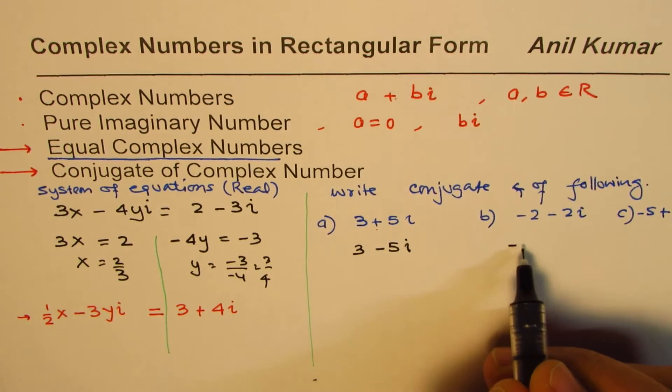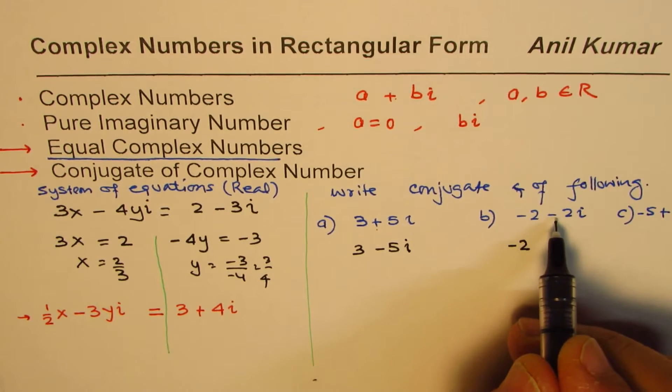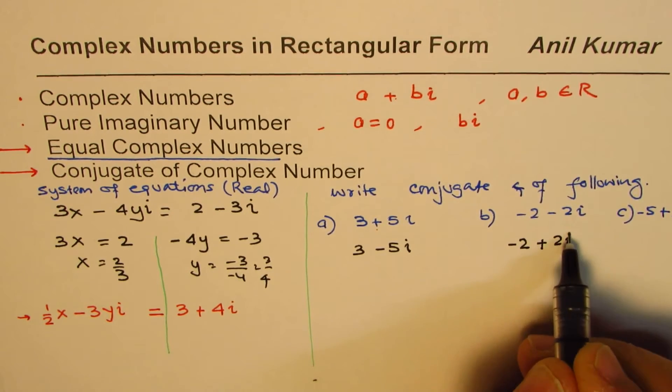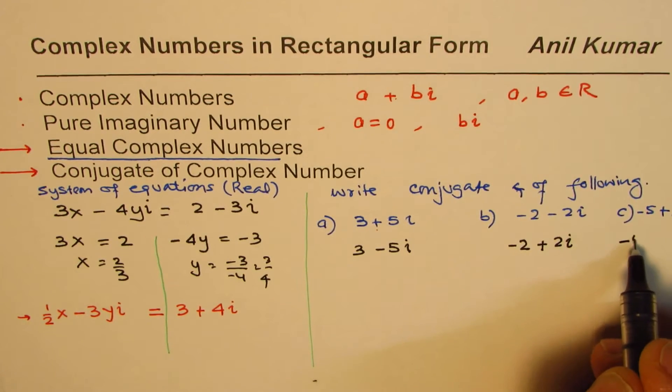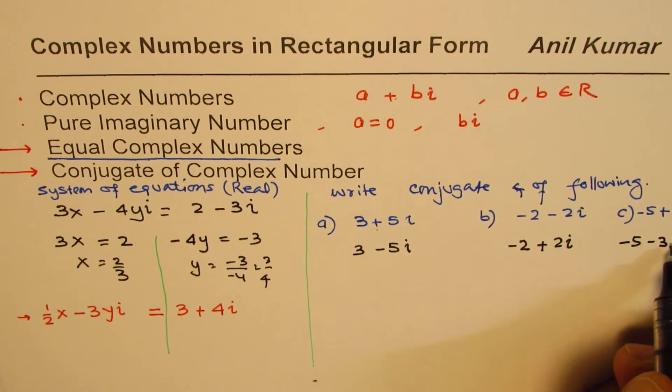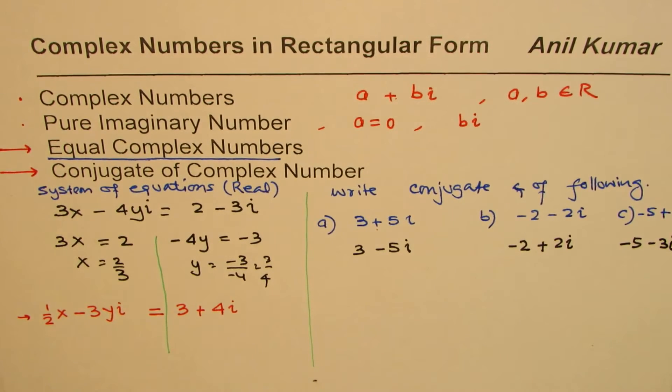In this particular case, we do not change the sign of the real part. The real part remains the same, but the complex part's sign changes from minus to plus. It becomes 2i with a plus sign. And the last one will be minus 5 minus 3i. So that is how you write the conjugate of any complex number.